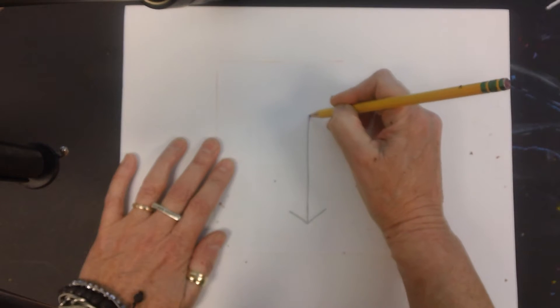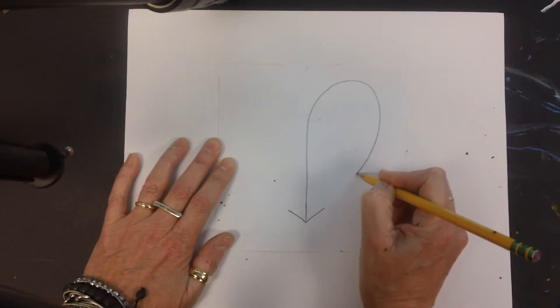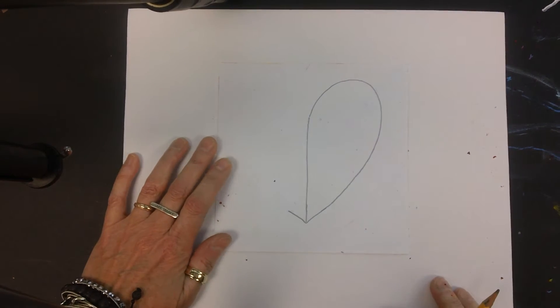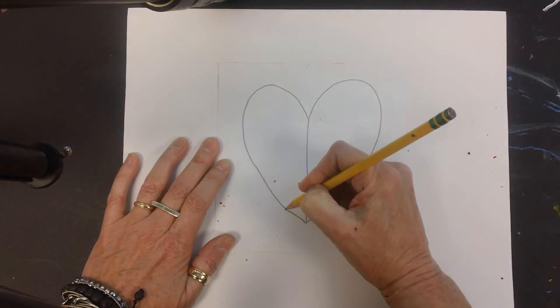Then I'm going to come up here and I'm going to make a big bump out, come out, and then it connects to that side of the arrow. And I'm going to do the same thing on the other side.